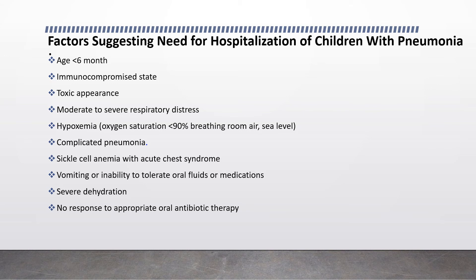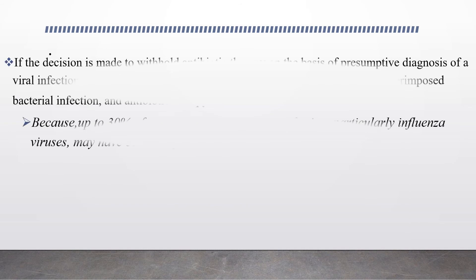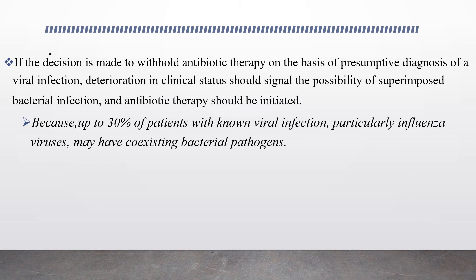If the decision is made to withhold antibiotic therapy on the basis of a presumptive diagnosis of viral infection, deterioration in clinical status should signal the possibility of superimposed bacterial infection and antibiotic therapy should be initiated. Up to 30% of patients with non-viral infection, particularly influenza virus, might have a coexisting bacterial pathogen, so careful follow-up is needed if antibiotic therapy is withheld considering viral etiology.